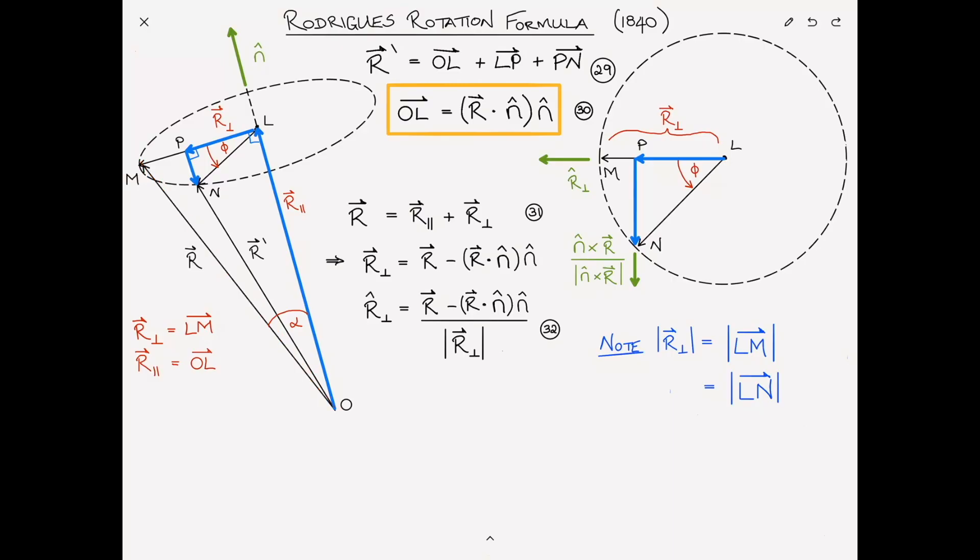We're going to assume that this angle is α between r and the axis of rotation. Don't confuse α with φ. φ is the amount that we're rotating about the axis of rotation, whereas α is the angle between the two vectors. From basic trigonometry, you should be able to see that the magnitude of LM is equal to the magnitude of r times sin α. Now a little bit of manipulation. We know that the magnitude of n̂ is 1, so I can multiply this by the magnitude of n̂. What is the magnitude of n̂ times the magnitude of r times sine of the angle between them? This is the cross product of those two vectors. The cross product of two vectors is defined as the magnitude of one times the magnitude of the other times sine of the angle in between them. We'll number all of these equation 33.